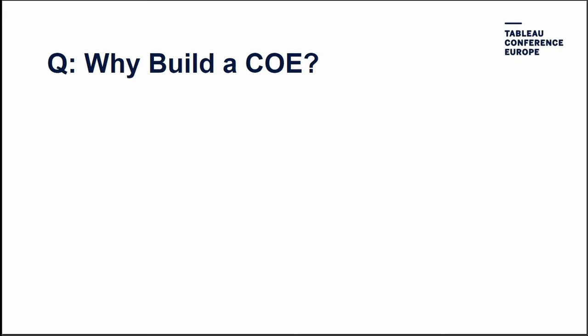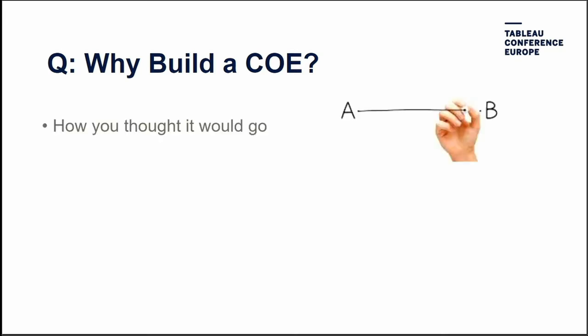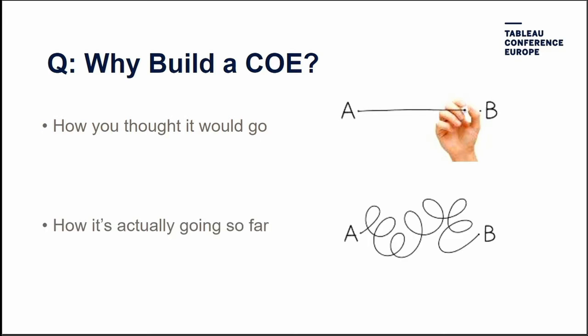So why are we building a COE? At the start of their Tableau journey, most customers are excited about what Tableau can help them achieve — they have big, lofty goals. They're envisioning a Tableau journey that looks like a nice straight A-to-B path. Unfortunately, in our experience, it's not so easy in most cases. Frequently the Tableau journey looks more like a windy or circuitous path. One big reason for that is because people are involved, and anytime people need to change, it doesn't always go according to plan. People are generally resistant to change.